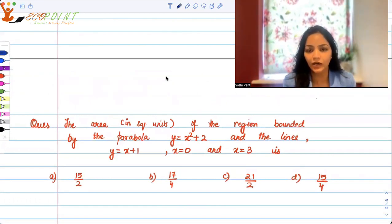You need to find the area of the region bounded by the parabola y equals x squared plus 2, and the lines y equals x plus 1, x equal to 0, and x equal to 3.